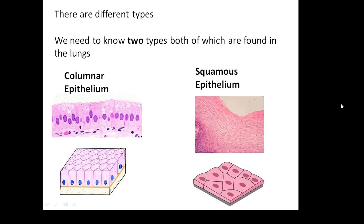There are different types, and there are two types that we need to know, both of which are found in the lungs. In the context of the lungs, there's columnar and squamous. Columnar epithelium is in columns, and squamous epithelium is squashed. So you've got columns and squashed epithelial tissue.